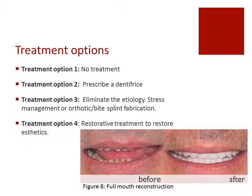Now I'd like to talk about the treatment options. Treatment option one is no treatment, if the patient isn't suffering any pain and isn't concerned with the aesthetics of their remaining teeth. Treatment two is to prescribe a dentifrice such as Sensodyne, which will block the dentinal tubules and help eliminate some sensitivity. The recommended option for many patients is treatment three: to eliminate the etiology if it can be isolated — for example, stress management, or fabricating an orthotic for a night grinder or bruxer. Treatment four is restorative treatment to restore the aesthetics, as seen in figure eight where a patient has undergone full mouth reconstruction.